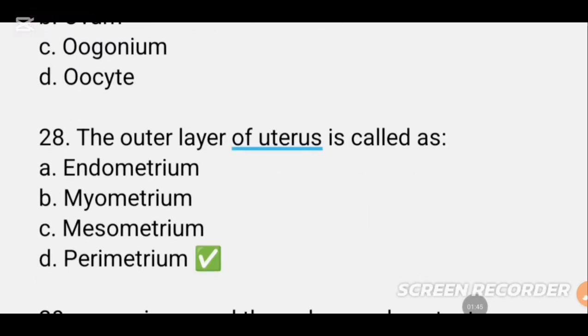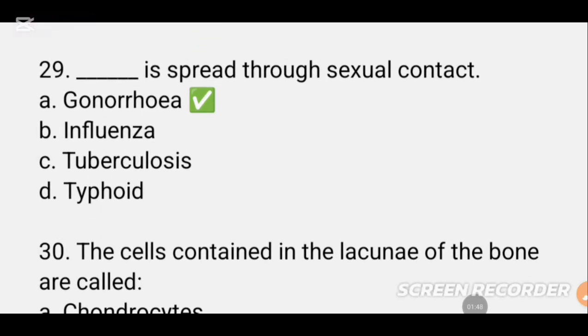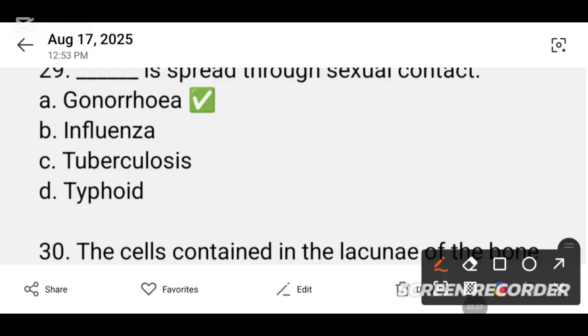Question number 29. DASH is spread through structural contact — how does a disease spread via sexual contact? From female to male and female options. The closest type of article will be selected as the answer.